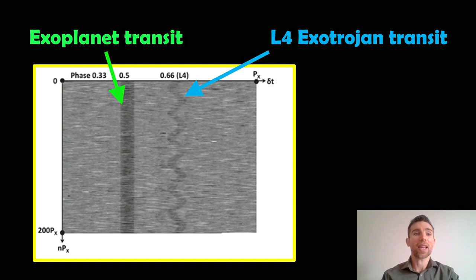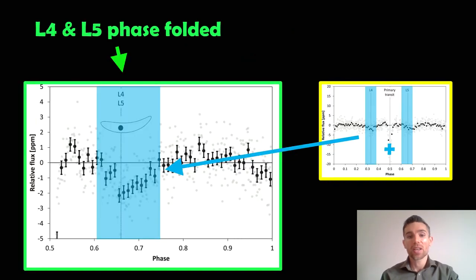So the primary exoplanet transit here, which is denoted at half a phase, you can see that's pretty constant. That's always occurring at half a phase. And it blocks out some light, comes around, does exactly the same thing again. Now if we had a Trojan object at the L4 Lagrange point, you can see it kind of waving about a bit. Each row is a different orbit and it's changed position ever so slightly. So you get this wavy effect. And all that's basically telling you is that this object, this exotrojan object is moving around the L4 Lagrange point.